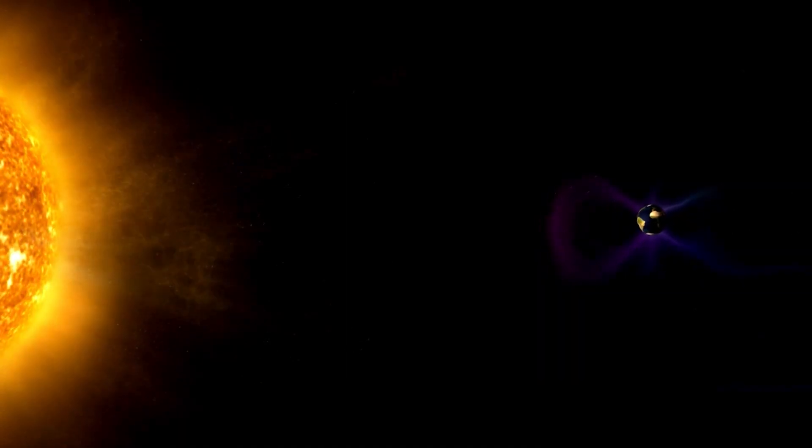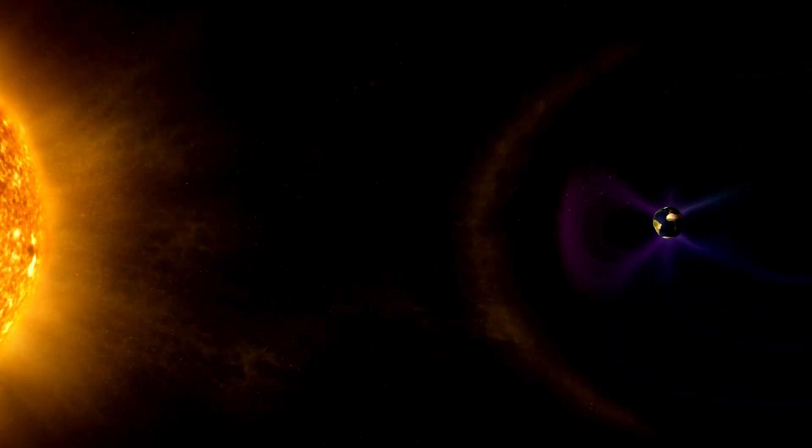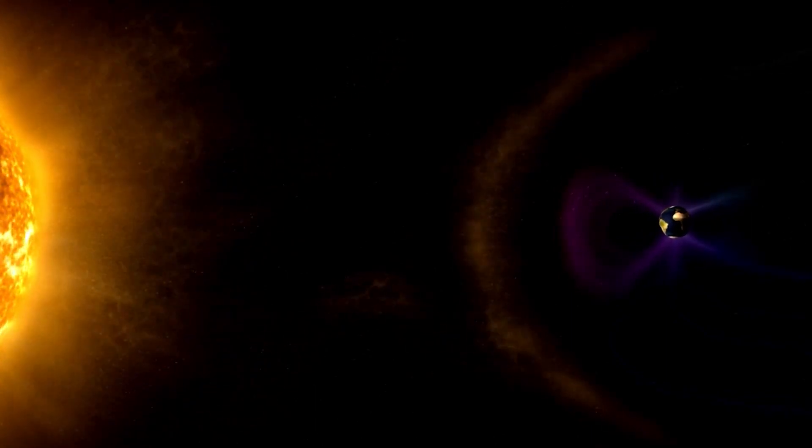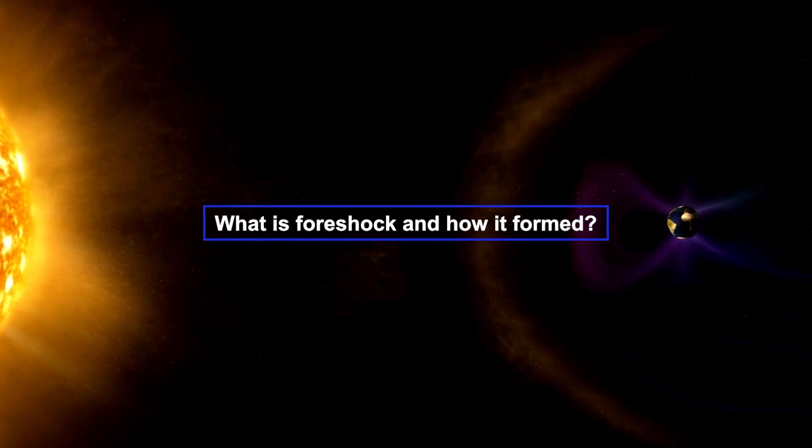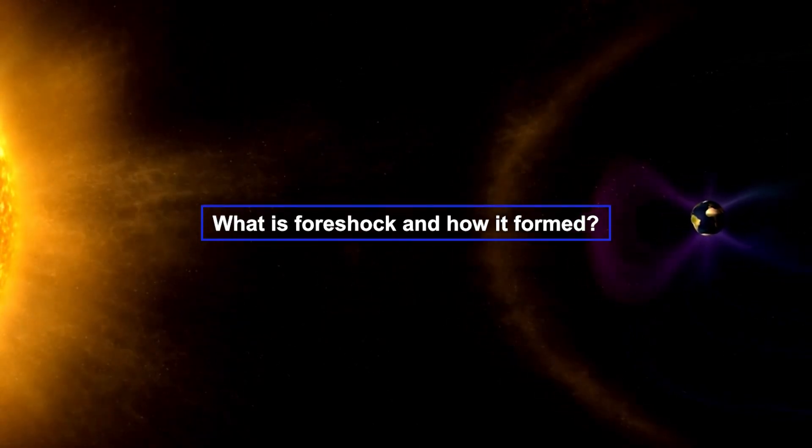But what happens when this stream of particles collides with the Earth's magnetic field? It creates a region known as the foreshock, and in this video we'll explore the fascinating story of the foreshock, how it's formed, and its impact on our planet.